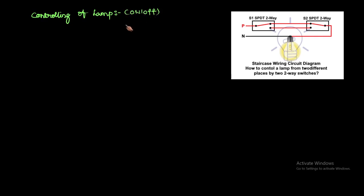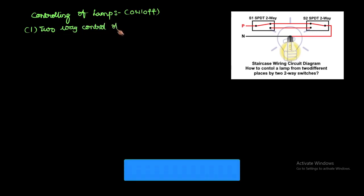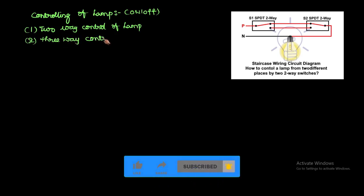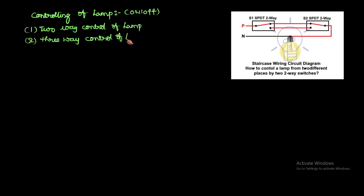This can be explained by considering two circuits. The first one is two-way control of the lamp, and the second one is three-way control of the lamp. This is a very important topic.